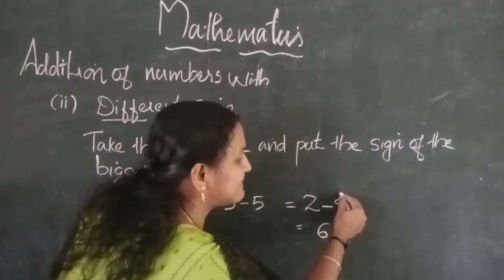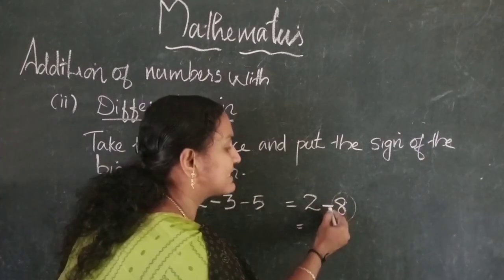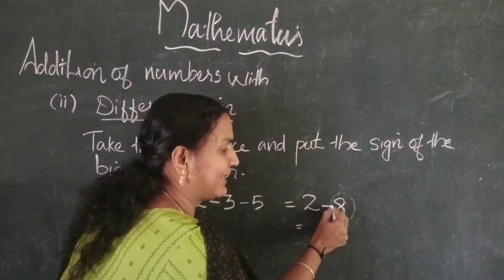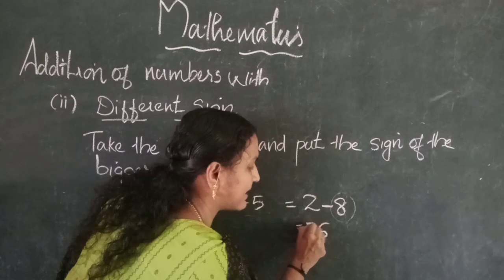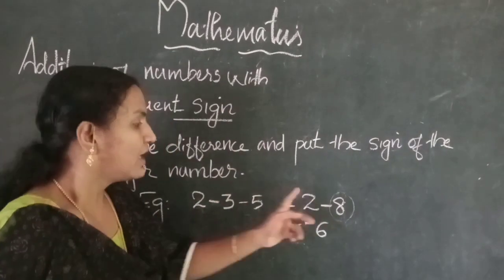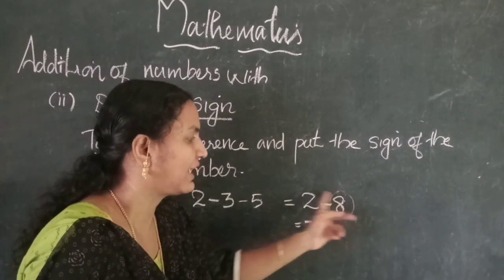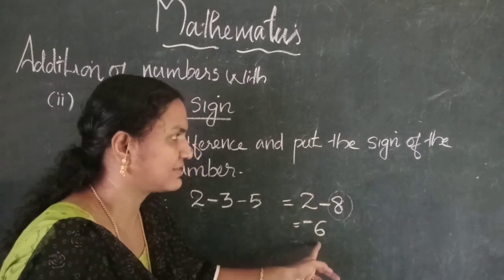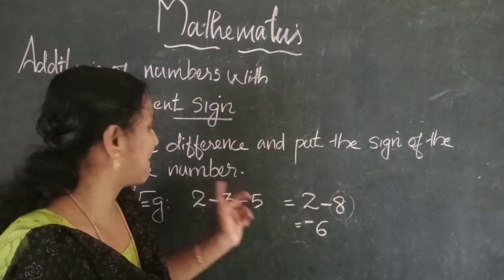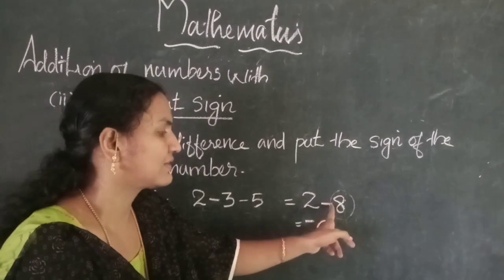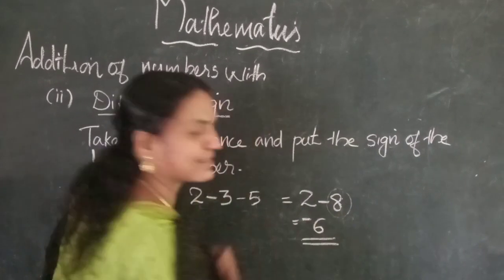The bigger number is 8, and its sign is minus. So we put minus. For 2 minus 8: first take the difference — 8 minus 2 is 6 — then put the sign of the bigger number. The sign is minus, so the answer is minus 6.